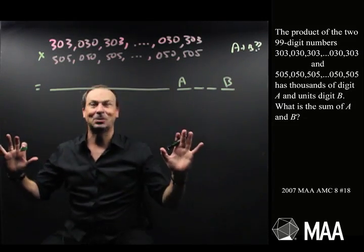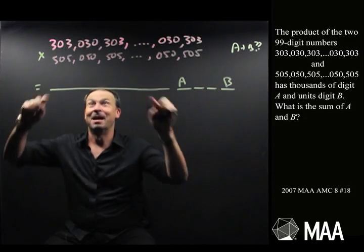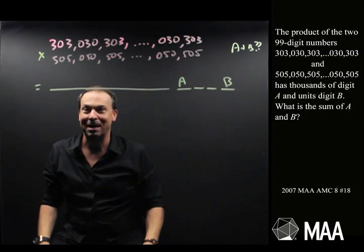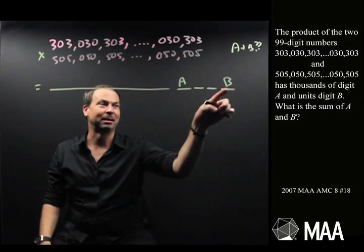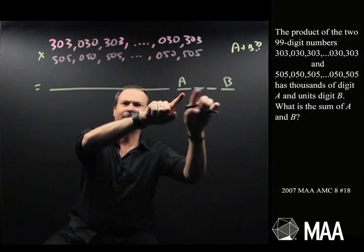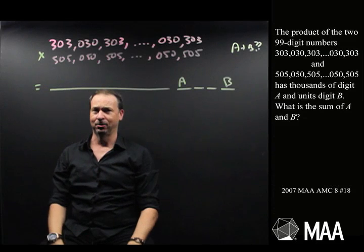I mean, basically, there's no way I'm going to multiply those two numbers together and get the answer, and then just see what the last digit and fourth-to-last digit are. That would be crazy. There's no way I could do that.